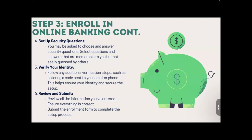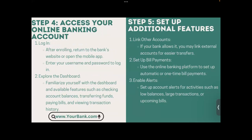Review all the information you've entered, ensure everything is correct, and submit the enrollment form to complete the setup process. Step four — access your online banking account: after enrolling, return to your bank's website or open the mobile app, enter your username and password to log in, and explore the dashboard. Familiarize yourself with features such as checking account balances, transferring funds, paying bills, and viewing transaction history.